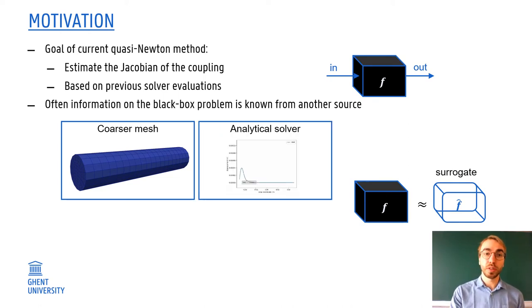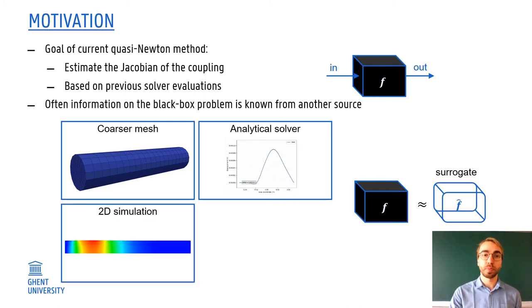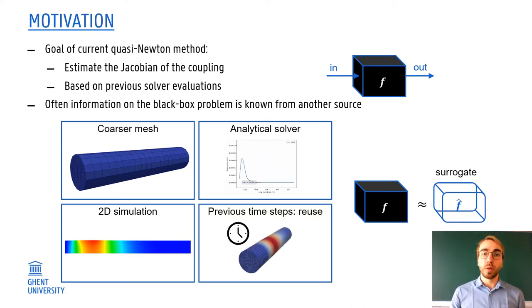And this can be a coarser mesh, for example, which solves much faster, or an analytical model which still captures the main behavior of the real problem, or a simulation with one dimension less. For example, this 2D axisymmetric simulation to model the full three-dimensional tube. Or finally, also previous time steps. So the previous time step is also a very good approximation of the Jacobian of the current time step. And this actually boils down to reuse, as is also used in all the quasi-Newton methods, but it fits perfectly inside of these methods as well.